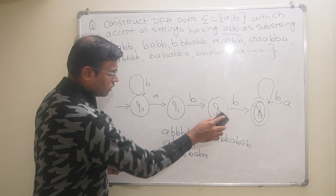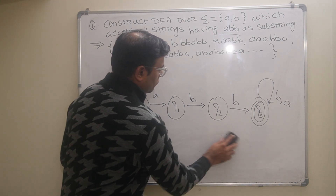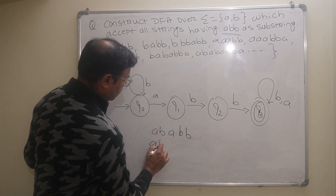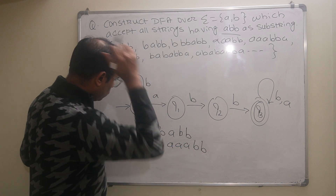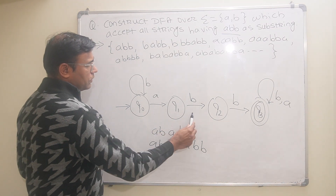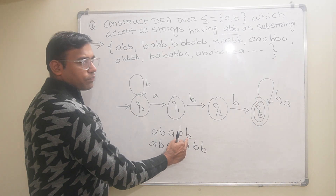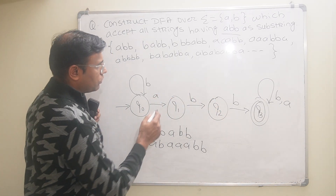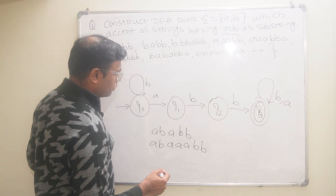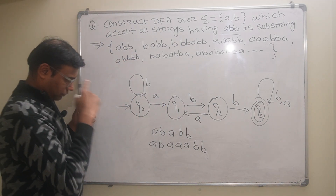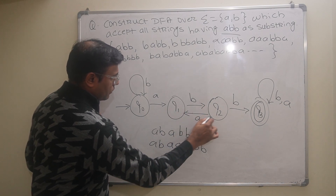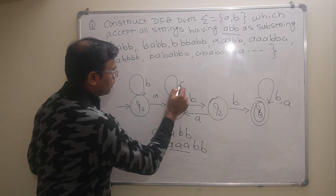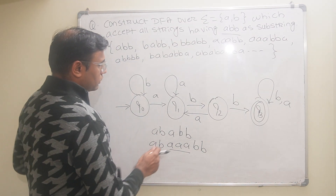Now consider strings like ABABB or ABAABB — there can be any number of A's between segments. After reading A and B, if another A appears, we should not apply a loop of A on Q2 because that would incorrectly accept strings like ABAB. Instead, for an A at Q1, we come back appropriately so it can accept ABABB. There can be any number of A's, so we apply a self-loop of A on Q1.